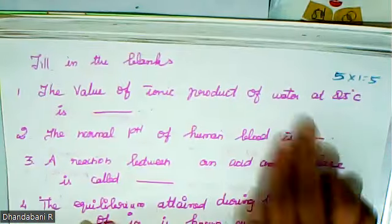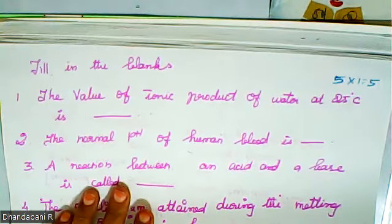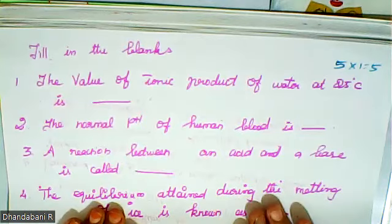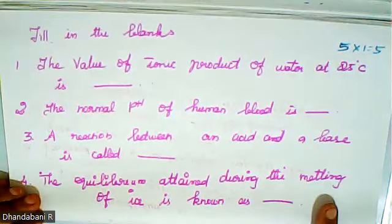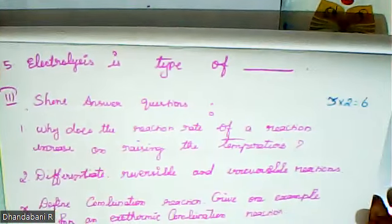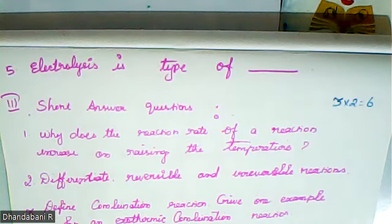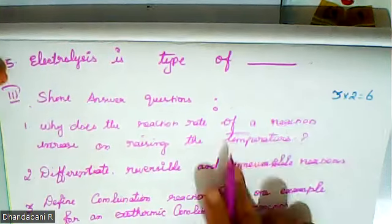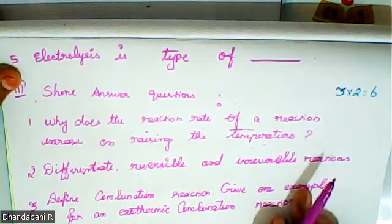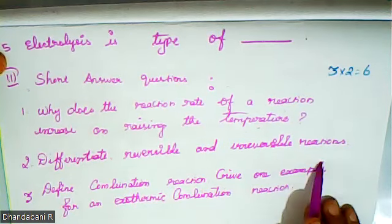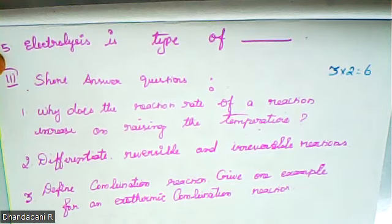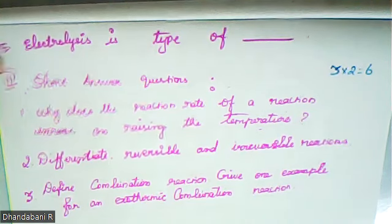Next is fill in the blanks: the value of ionic product of water at 25 degrees centigrade is blank. The normal pH of human blood is blank. A reaction between an acid and a base is called what? Equilibrium attained during the melting of ice is known as what? Short answer questions carry only two marks, three questions: why does the reaction rate increase on raising the temperature? Differentiate reversible and irreversible reaction.